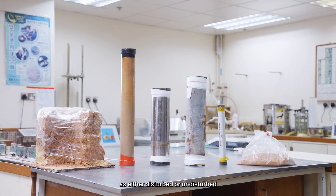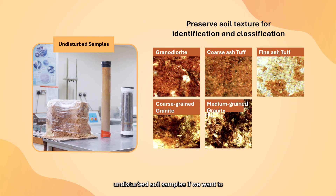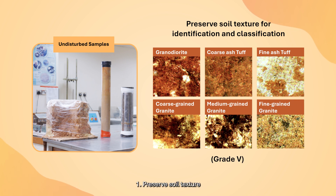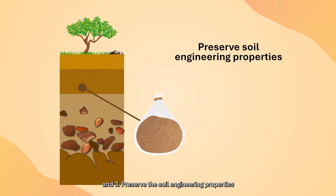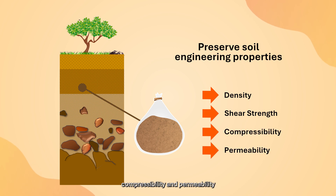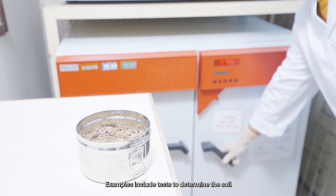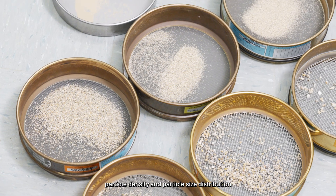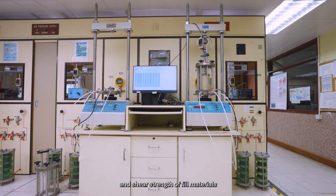Samples can be classified as either disturbed or undisturbed. We should carry out tests using undisturbed soil samples if we want to: one, preserve the soil texture for soil identification and classification; two, preserve the soil structure such as relic joints and kaolin veins; and three, preserve the soil engineering properties which include density, shear strength, compressibility, and permeability. Otherwise, disturbed soil samples may be used — for example, tests to determine soil particle density, particle size distribution, compaction characteristics, and shear strength of field materials.